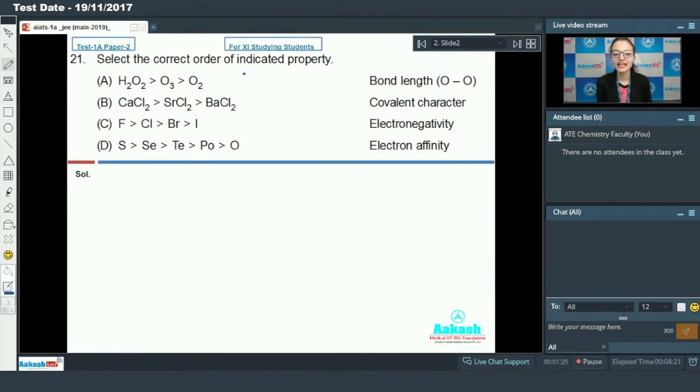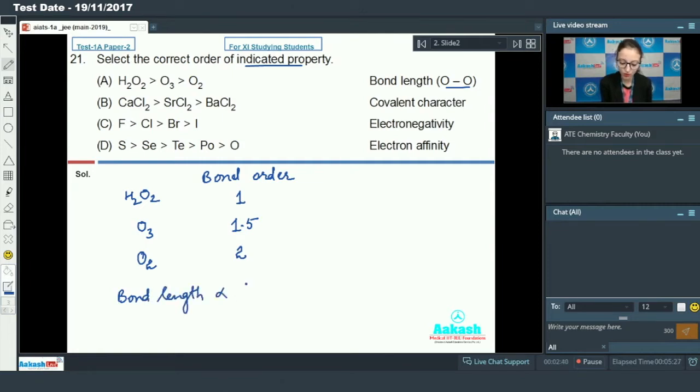Question number 21 says, select the correct order of indicated property. First property is bond length of oxygen-oxygen bond. We have to compare the bond length of H2O2, O3 and O2 molecule. To compare bond length, we need bond order of oxygen-oxygen bond. H2O2 has bond order of 1. In ozone molecule, the bond order is 1.5 due to resonance. In O2 molecule, the bond order is 2.